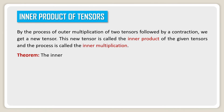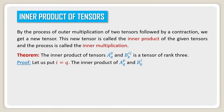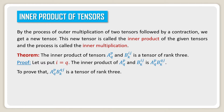Theorem: The inner product of tensors a_pq and b_ijk is a tensor of rank 3. Let us substitute i equal to q. Then the inner product of a_pq and b_ijk is a_pq times b_qjk. We need to prove that a_pq b_qjk is a tensor of rank 3.